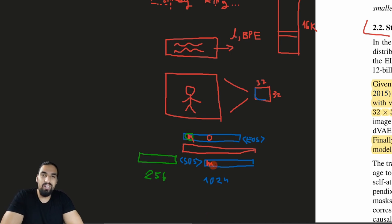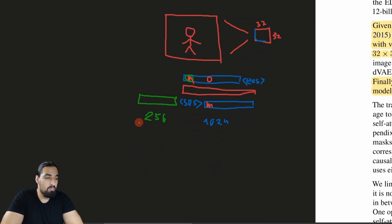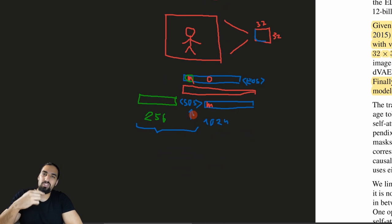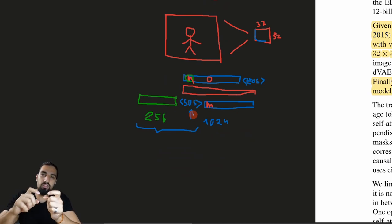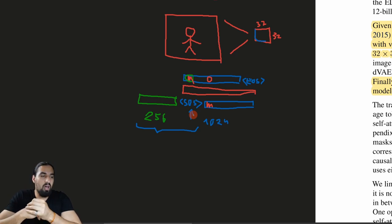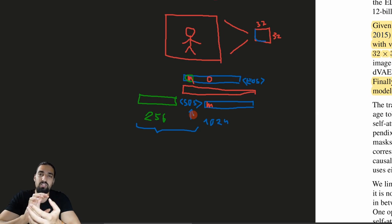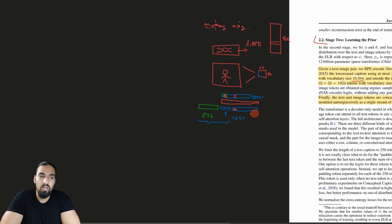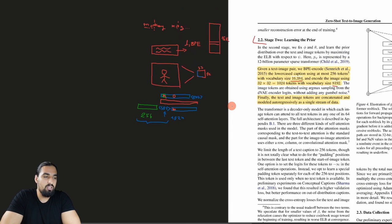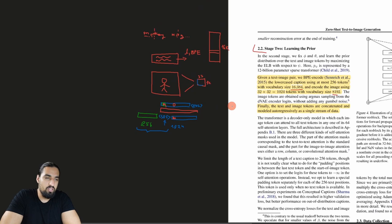At inference, you just prepend the caption and the special start-of-image token, then start sampling from the model until you get 32×32 tokens. Pass that through the VQVAE decoder and out comes a novel image. The caption can be completely novel — the model has never seen it during training, like the taper and hedgehog examples shown earlier.